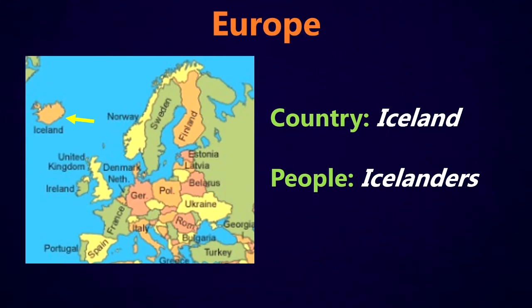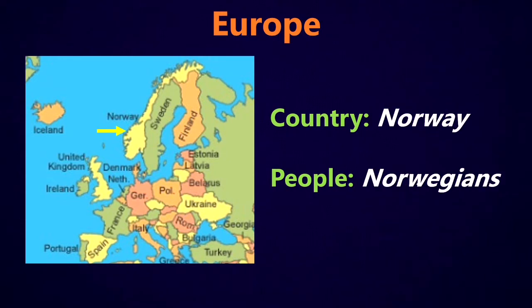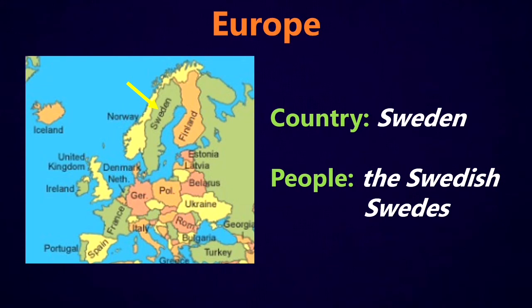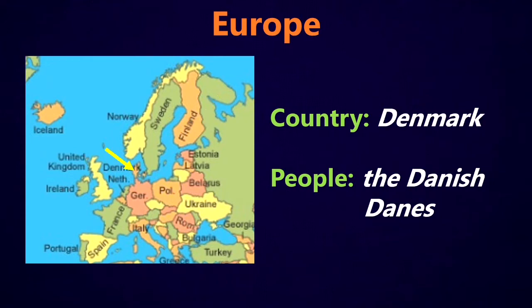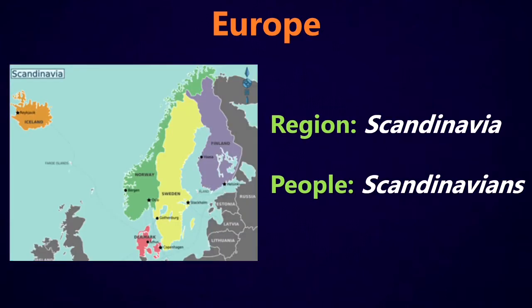If we go a little bit north, we've got Iceland and the people are Icelanders. We've got Norway and the people are Norwegians. We've got Sweden and the people are the Swedish, or Swedes. We've got Finland and the people are the Finnish, or Finns. And we've got Denmark and the people can be called the Danish, or Danes. Now if we take those countries together as a group, we've got this region called Scandinavia. The people from Scandinavia are called Scandinavians, and they include the countries Iceland, Norway, Sweden, Finland, and Denmark.